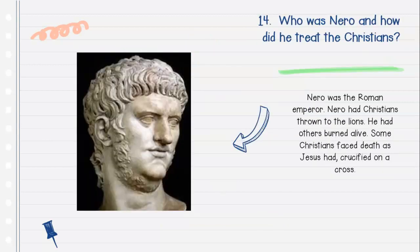Question number fourteen: Who was Nero, and how did he treat the Christians? Nero was the Roman emperor. Nero had Christians thrown to the lions. He had others burned alive. Some Christians faced death, as Jesus had, crucified on the cross.